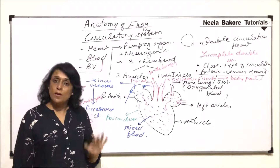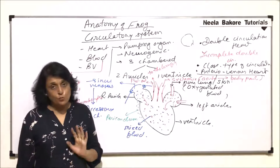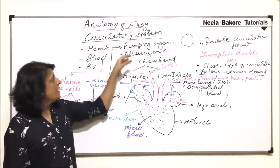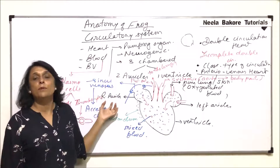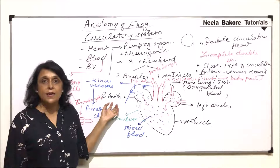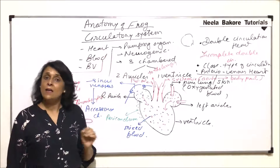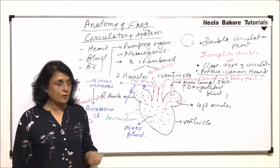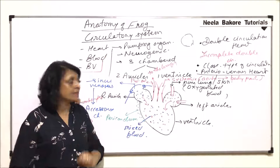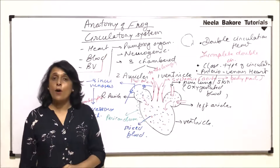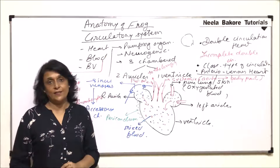The circulatory system in case of frogs is well developed. All components are present — heart, blood and blood vessels — and this is the structure of the heart of the frog.